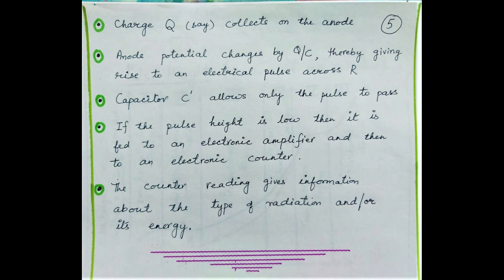In the diagram, there is another capacitor C prime which allows only the pulses to pass to the circuit connected ahead. If the pulse height is low, it can be fed to an electronic amplifier and then to an electronic counter, and finally we get information about the incident radiations or particles in terms of counts given by the counter. This information can be about the type of particle, how much is their ionizing power, and what is their energy.